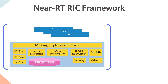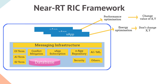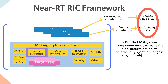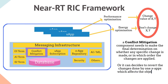A key question arises: what if multiple X-Apps conflict — for example, one optimizing performance and another doing energy optimization — resulting in conflicting parameters? This is addressed by the Conflict Mitigation Service. Conflict Mitigation addresses conflicting interactions between different X-Apps, since an application will typically change one or more parameters to optimize a specific metric. The Conflict Mitigation component makes the final determination on whether a specific change is made, in which order changes are applied, or whether to revert changes made by one X-App that affect another X-App's objective.